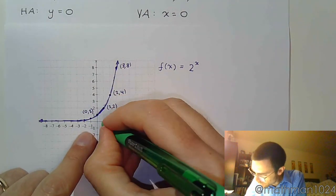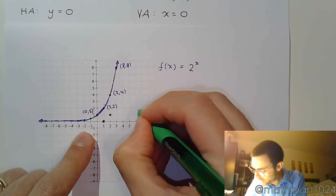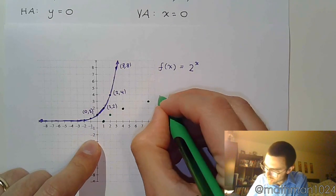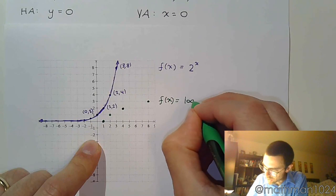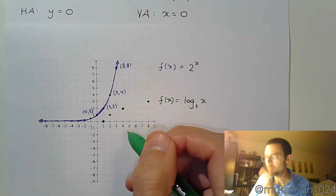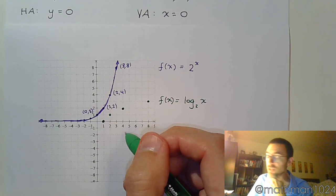So it's going to have 1, 0. It's going to have 2, 1. It's going to have 4, 2. And it's going to have 8, 3. If we're looking at this as a logarithm base 2. Now, it's kind of weird to think about it, but it's almost like an exponential turned on its side.